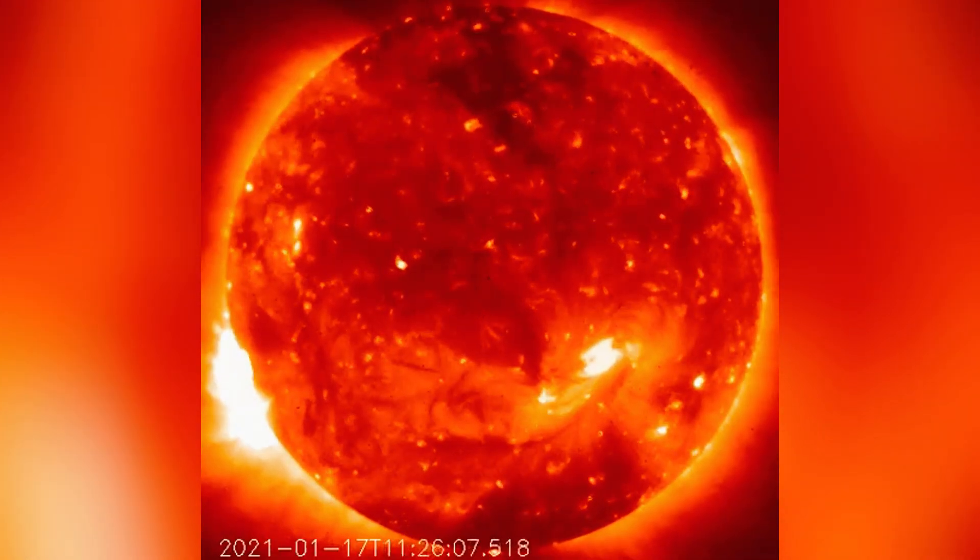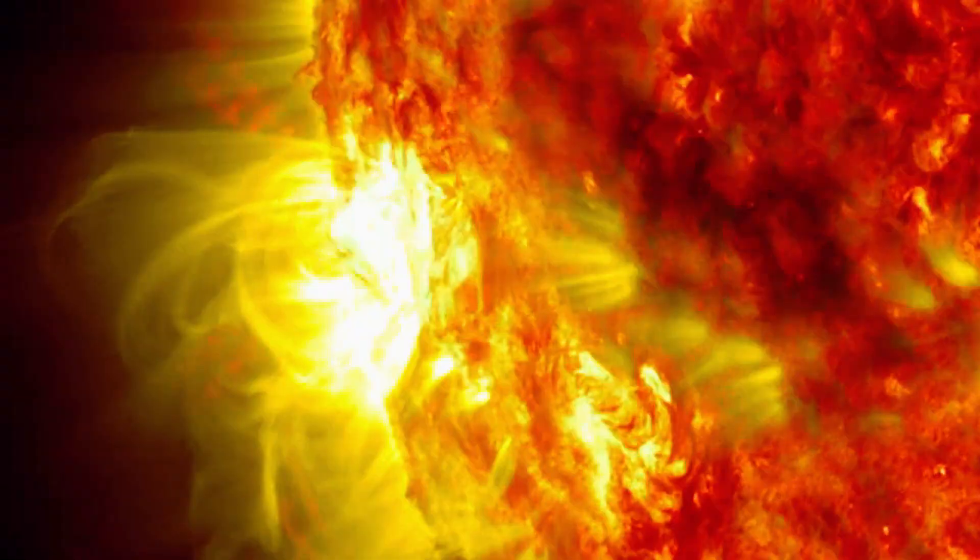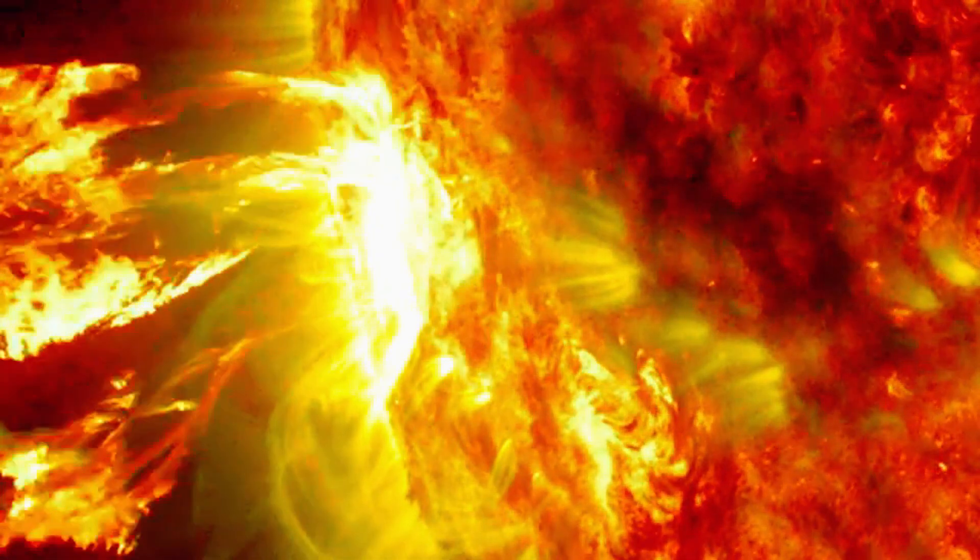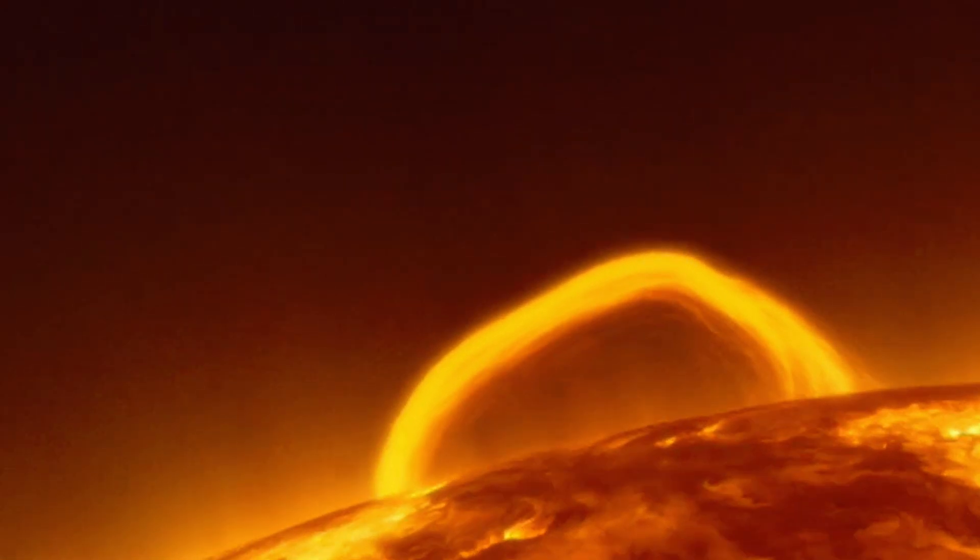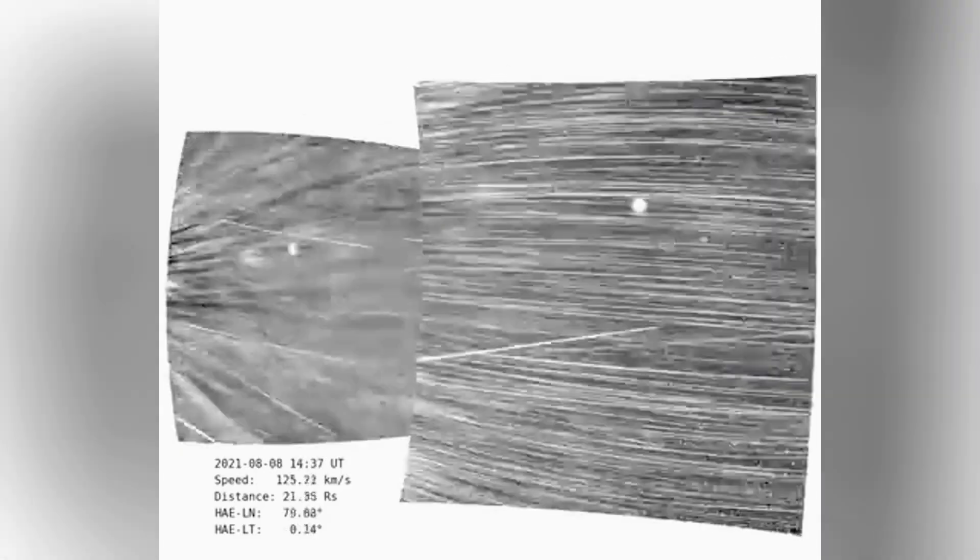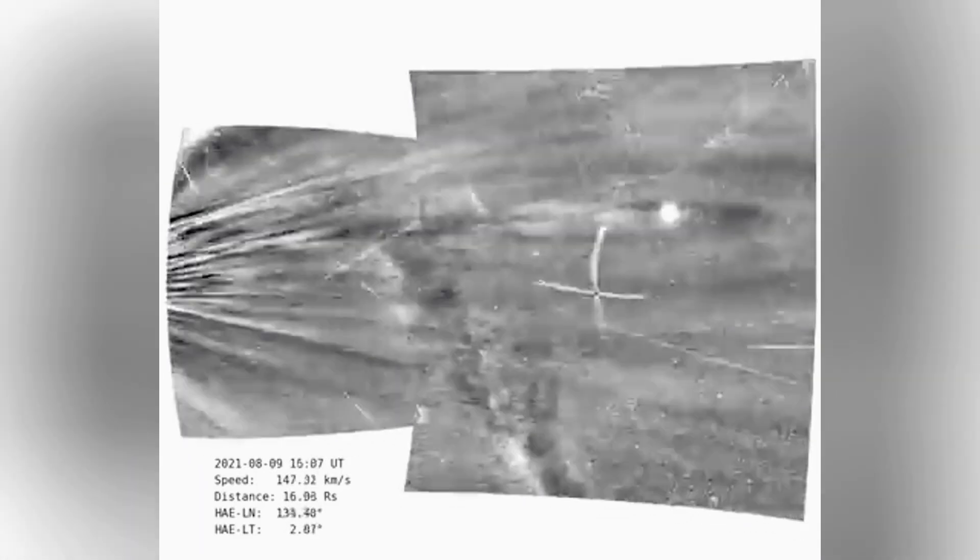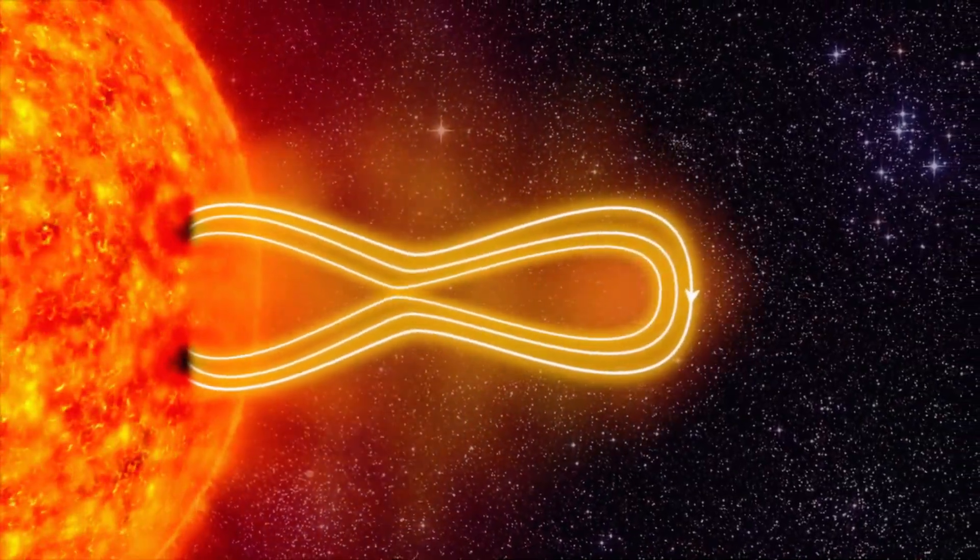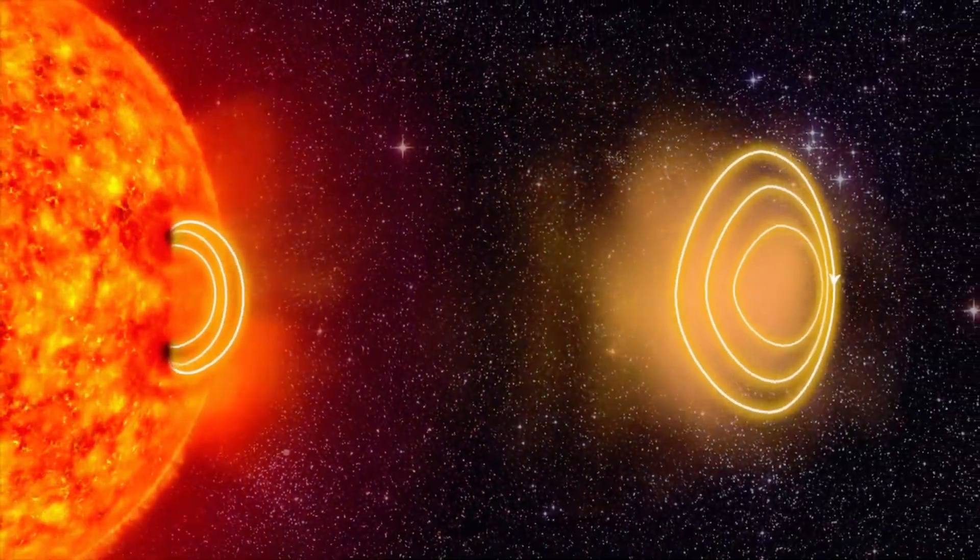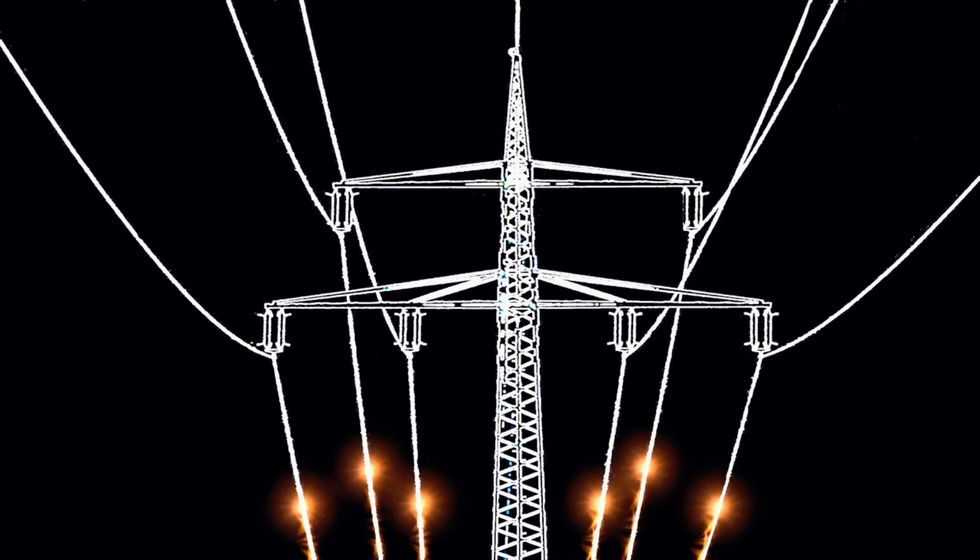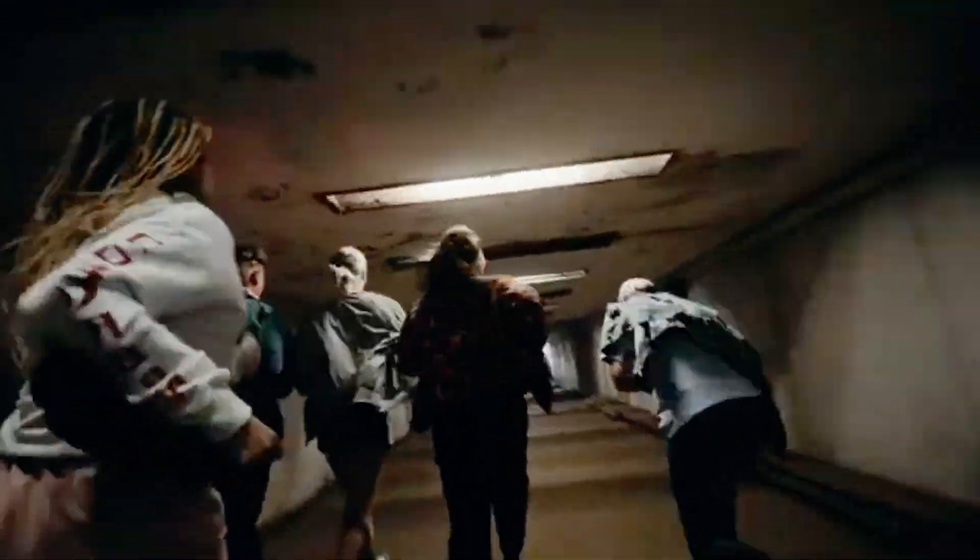Right now, the sun is reaching the peak of its 11-year activity cycle, increasing the risk of massive solar eruptions. These eruptions, called coronal mass ejections, send billions of tons of charged particles hurtling toward Earth at millions of kilometers per hour. If one of these superstorms collides with our planet's magnetic field, it could fry satellites, disrupt power grids, and throw our world into chaos.